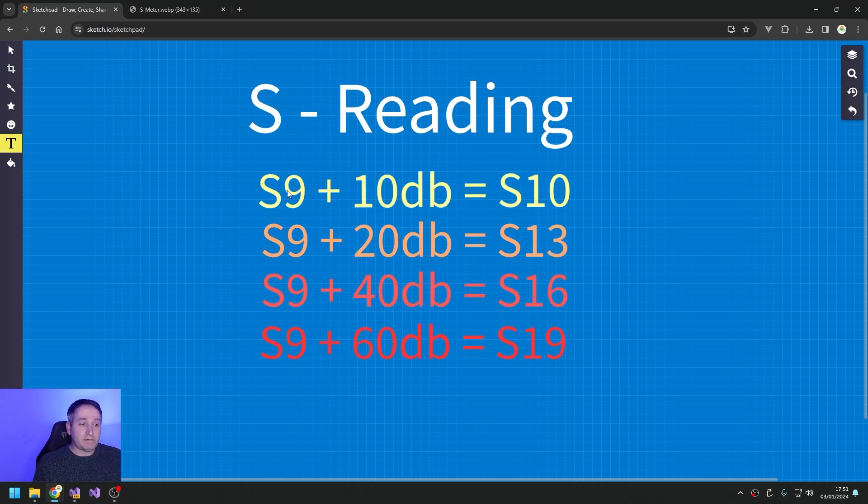Once you get to S9 and plus 10 dB, well if you divide the 10 dB by the 6, you end up with a little bit, so if we round up we end up with S10. 20 dB over S9 is rounded up to an S meter reading of S13. 40 dB would be the equivalent of S16, and plus 60 dB would be the equivalent of S19.